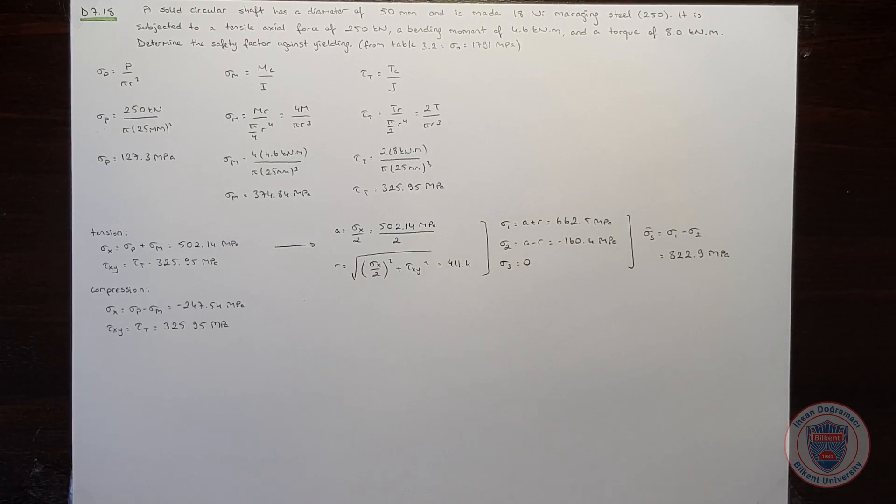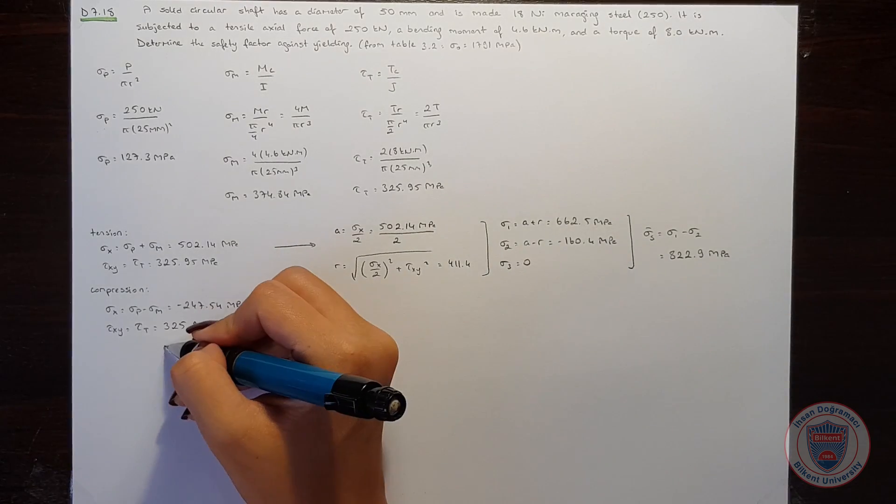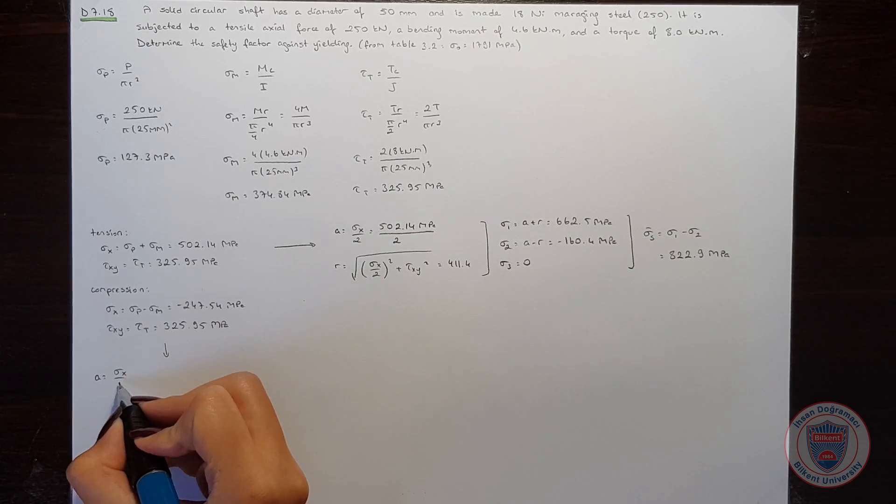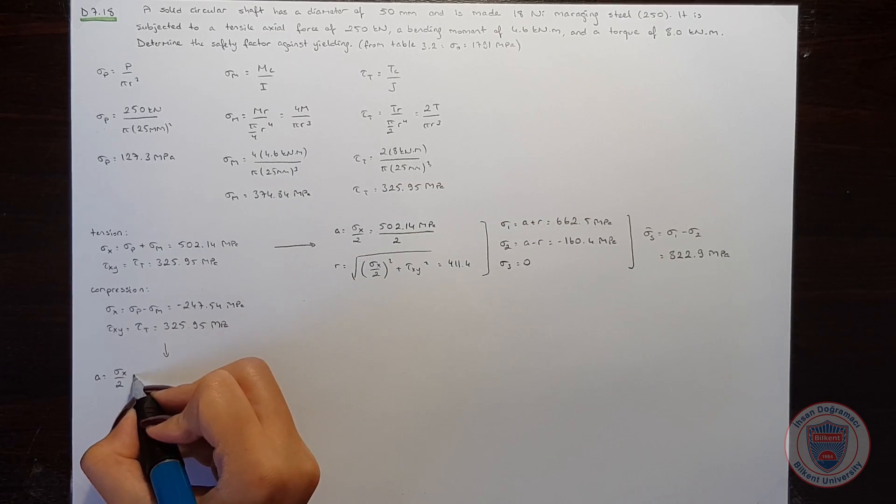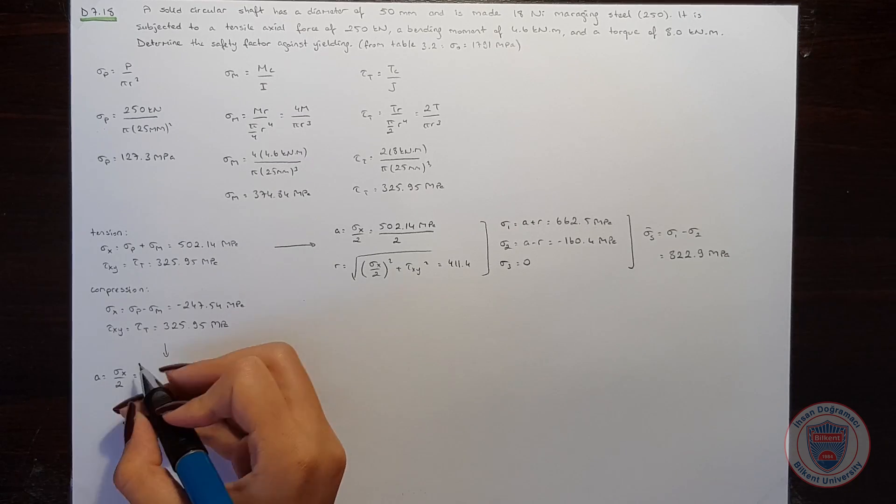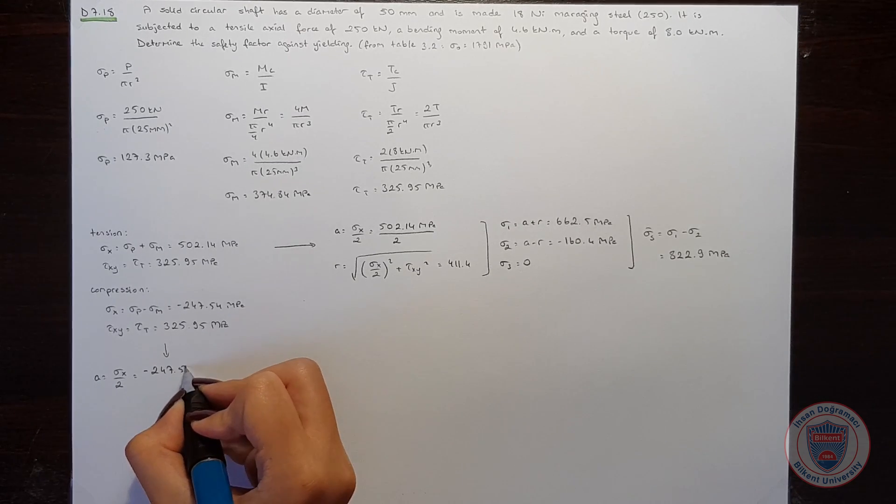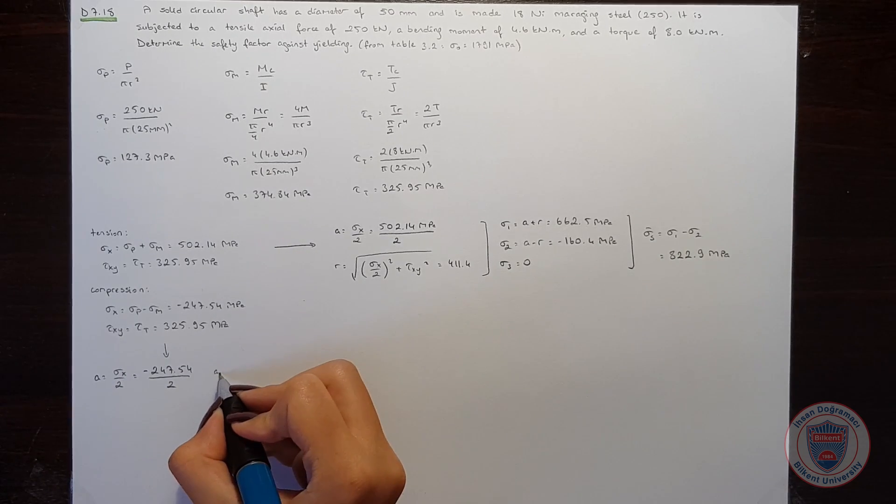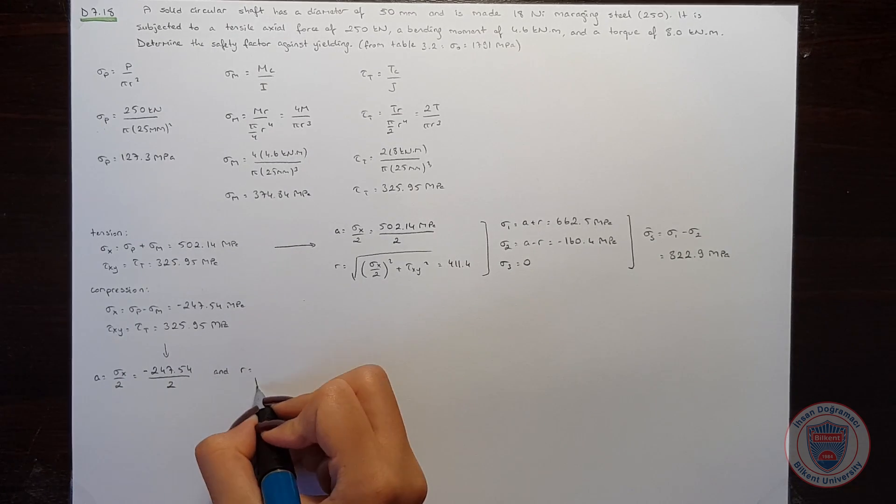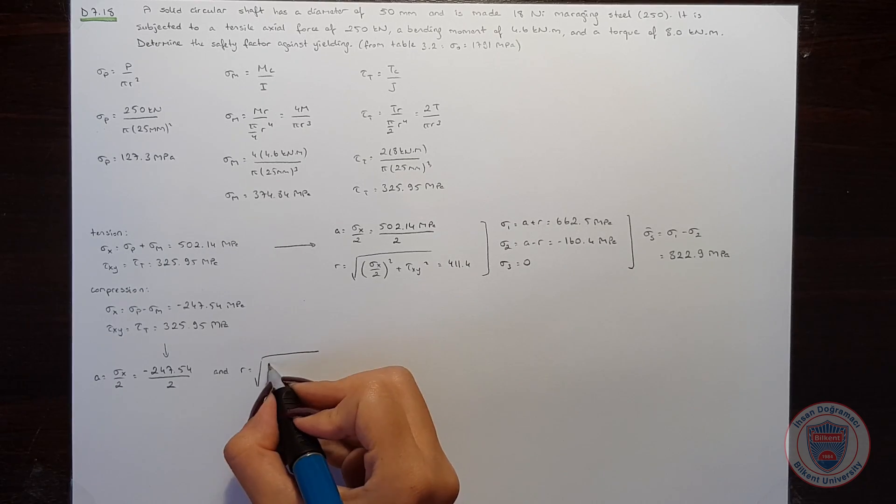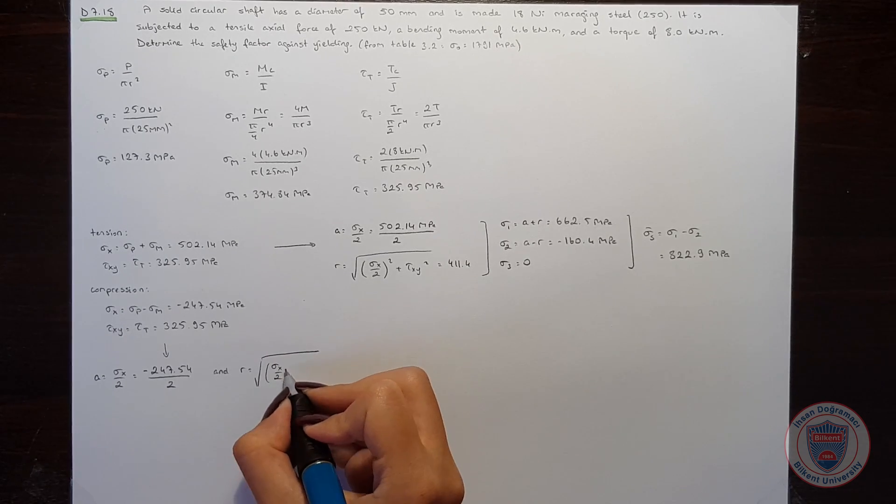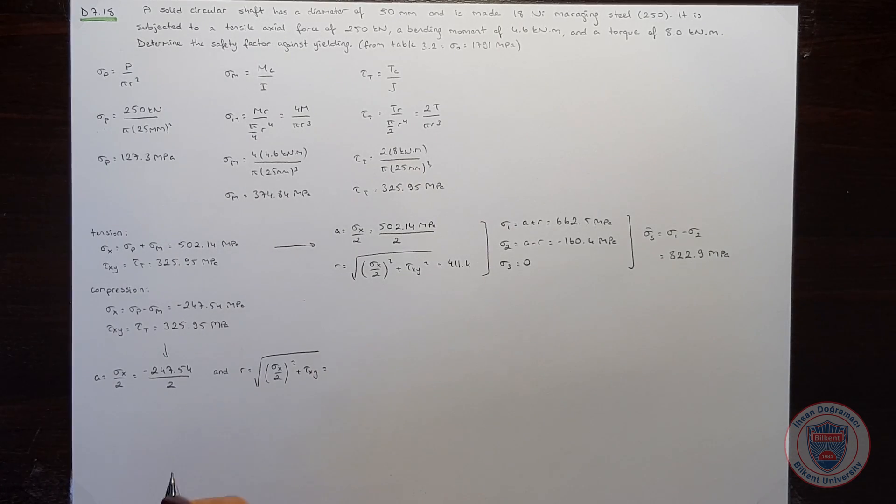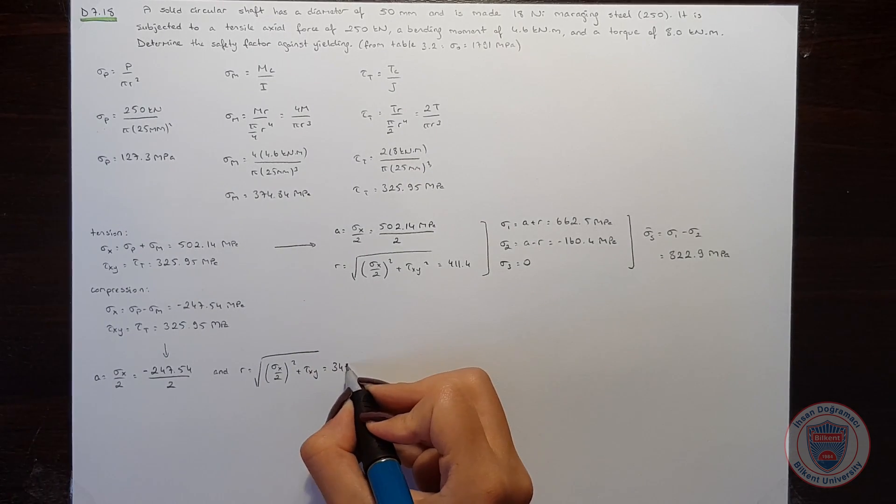Let's calculate the compression case. In this case, a will be, again, sigma x over 2, which is minus 247.54 over 2. And r will be, and it is equal to 348.7.